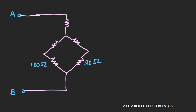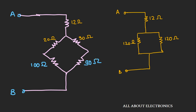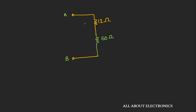Now the circuit looks like this with resistor values of 12 ohm, 20 ohm, and 30 ohm. In this circuit, the 100 ohm and 20 ohm resistors are connected in series, and the 30 ohm and 90 ohm resistors are connected in series. So the equivalent circuit has two 120 ohm resistors connected in parallel, and their equivalent parallel resistance comes out to be 60 ohm. Now the 60 ohm and 12 ohm resistors are connected in series, so the equivalent resistance between nodes A and B is 72 ohms.